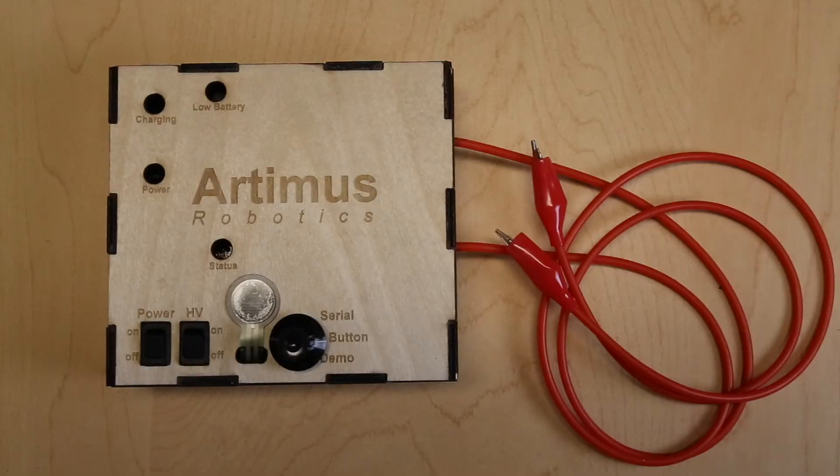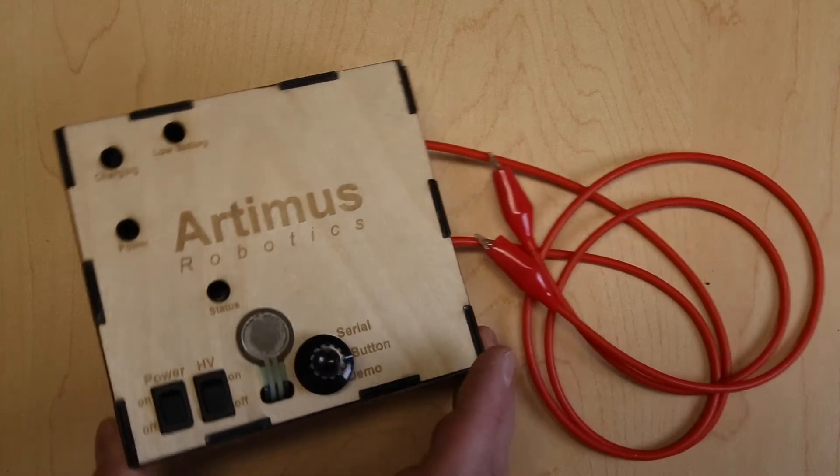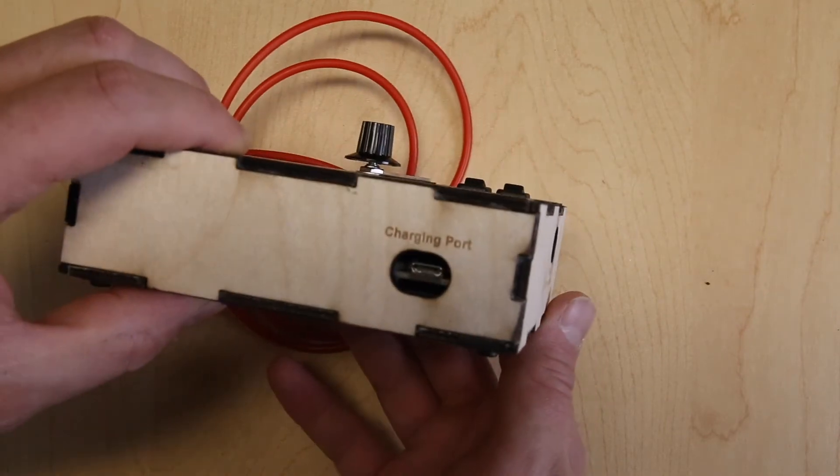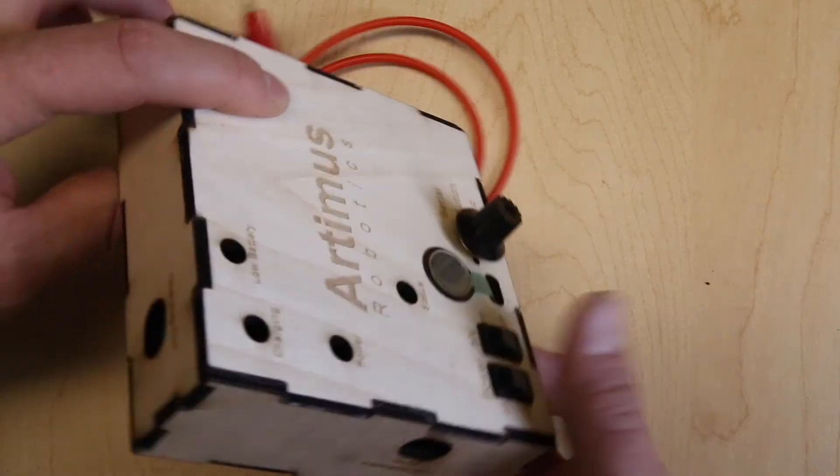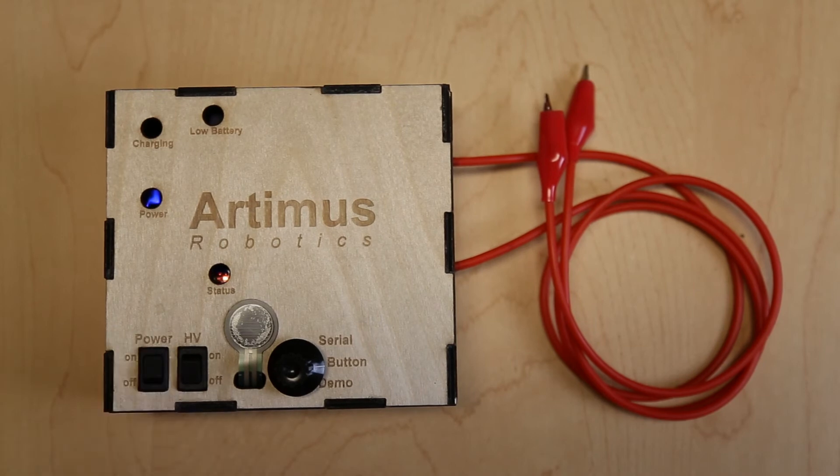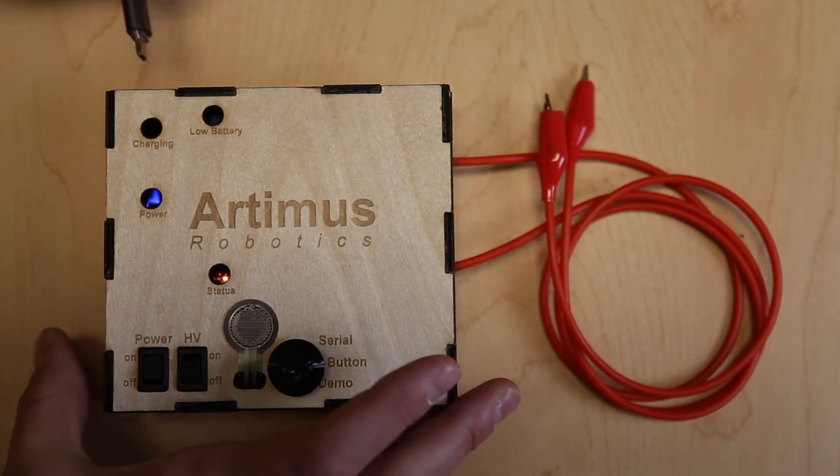The power supply also has two cable ports: one port for connecting the power supply to your computer and controlling the device through a serial command, and one port for charging the onboard battery. The power supply is completely portable and can be powered by the internal battery or while connected to an outlet.